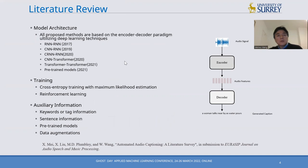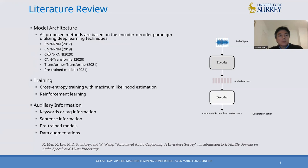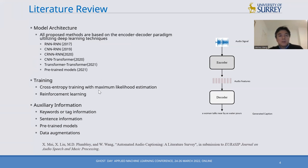In existing systems, the encoder-decoder framework is often used, where the encoder takes the audio signal as input and generates audio features. The audio features are then passed through the decoder to generate the captions. Popular encoder frameworks include recurrent neural networks, convolutional neural networks, or transformers.